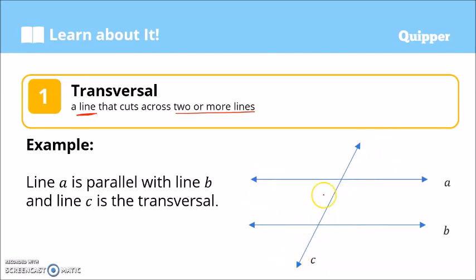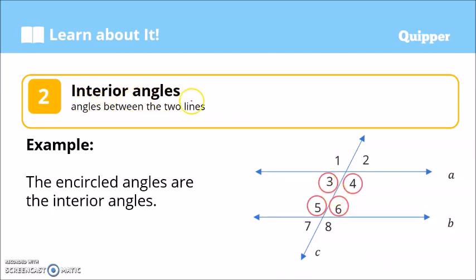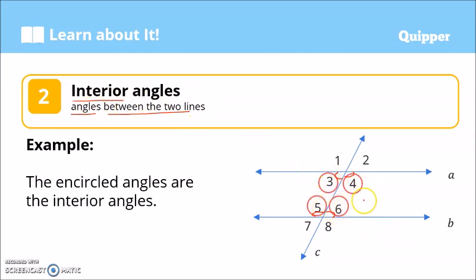In this figure with lines A and B, we have what we call interior angles. Interior angles are angles between the two parallel lines — from the word 'interior,' meaning inside. So we have angle 3, angle 4, angle 6, and angle 5. We call these four angles interior angles.